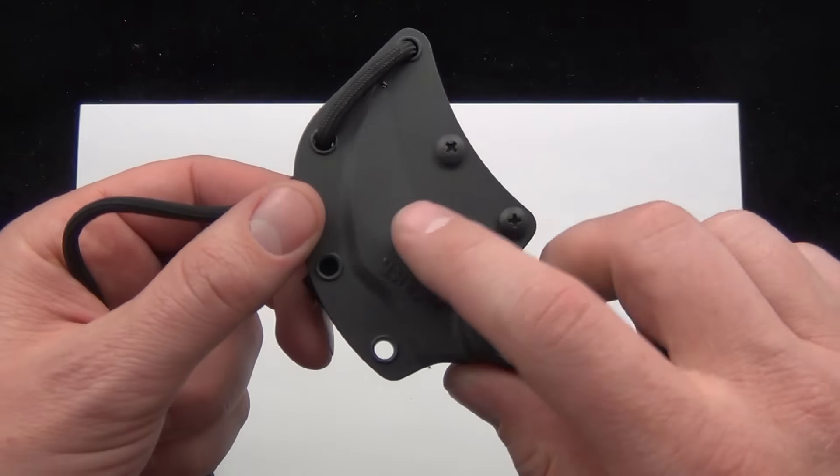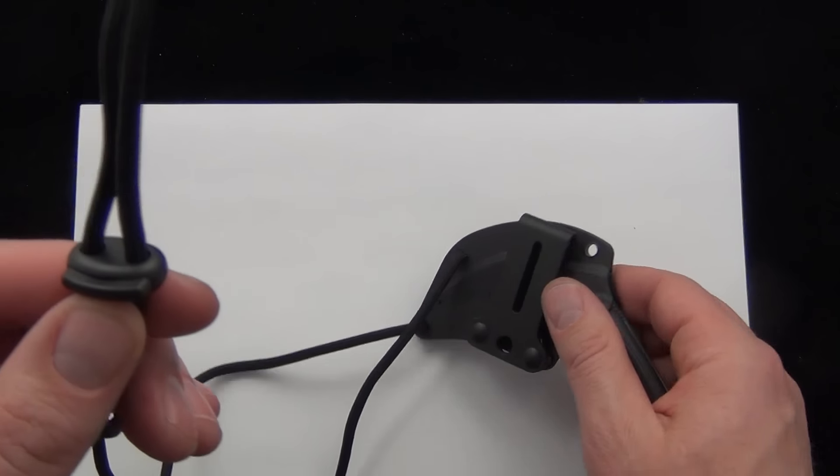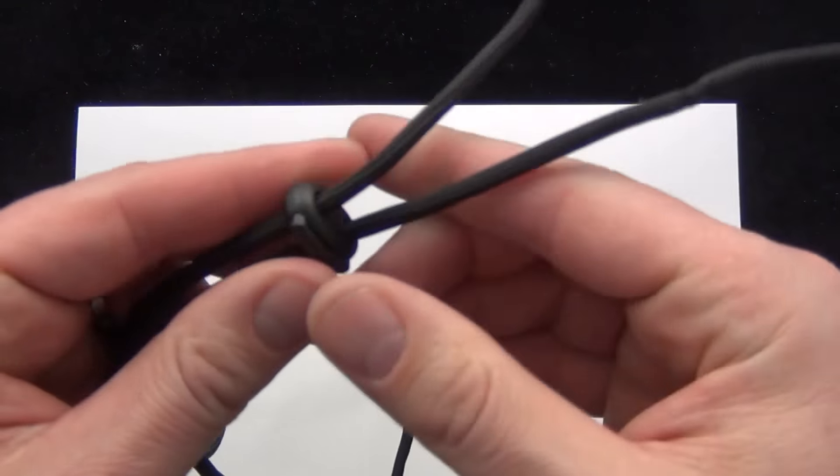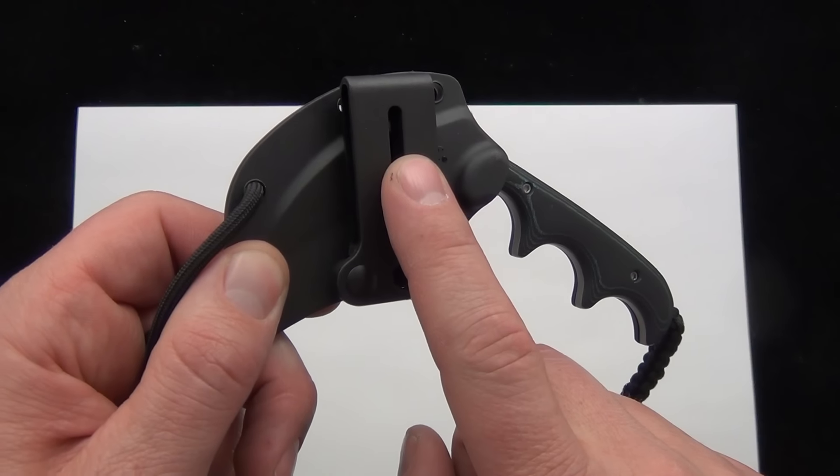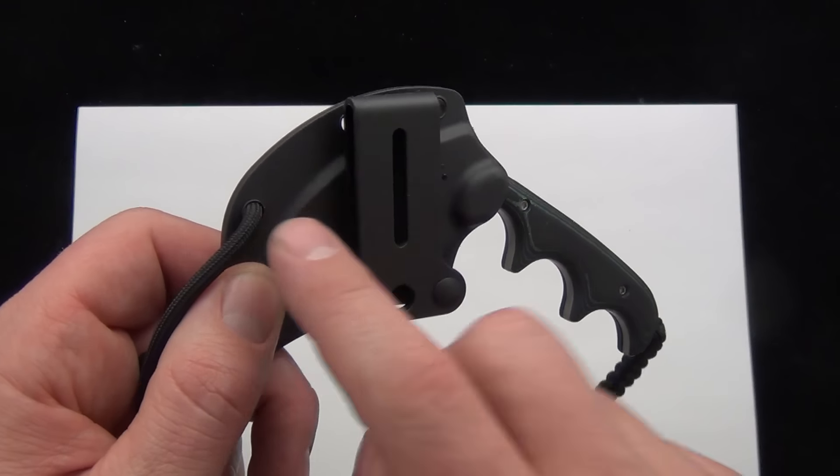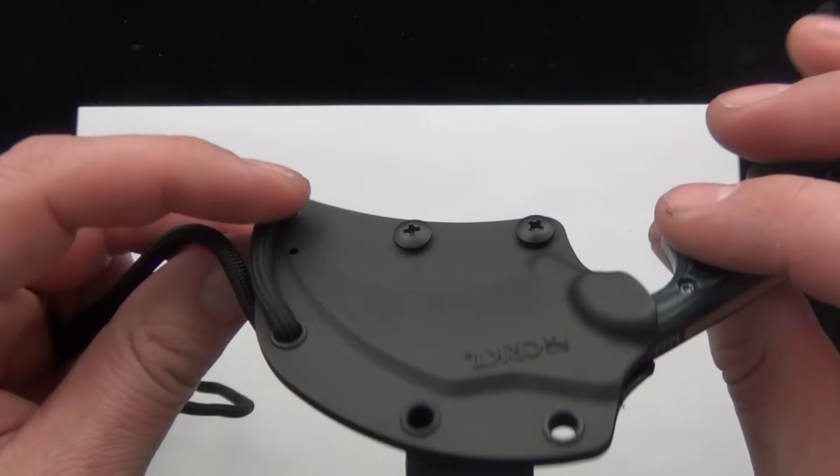It comes in the plastic injection molded sheath. You have a little paracord strap on it, this is real paracord, which I like. You have an adjustable bead there, so you can tighten it down depending on how high up you want it on your neck. It also comes with this belt loop that is not attached to the sheath. I wanted to attach it so you could see how it looks. You can carry it on your belt this way.